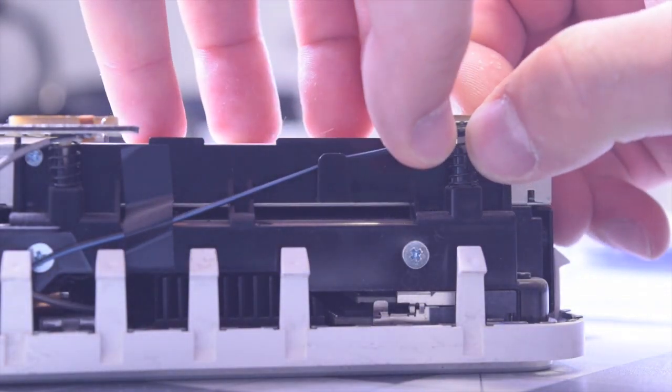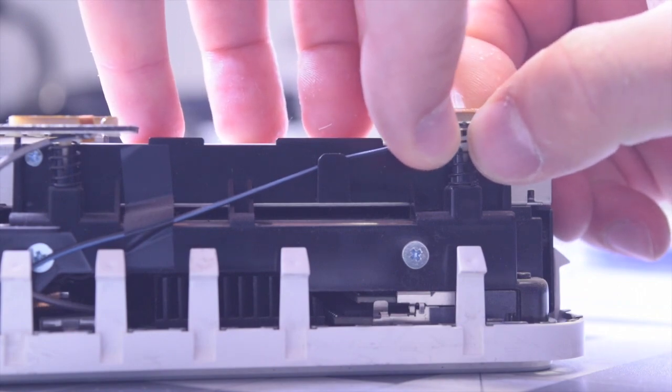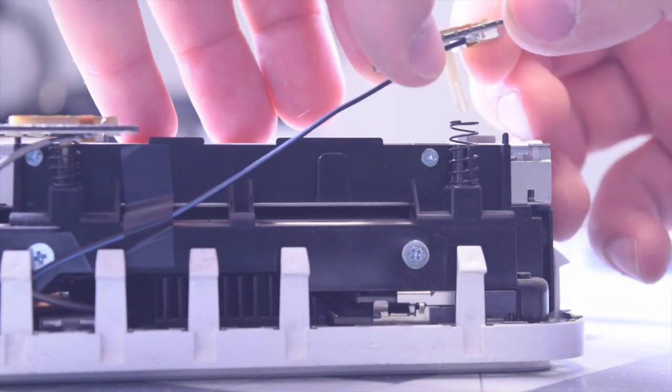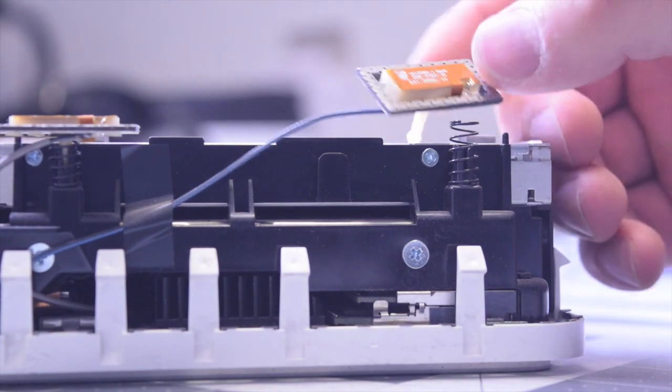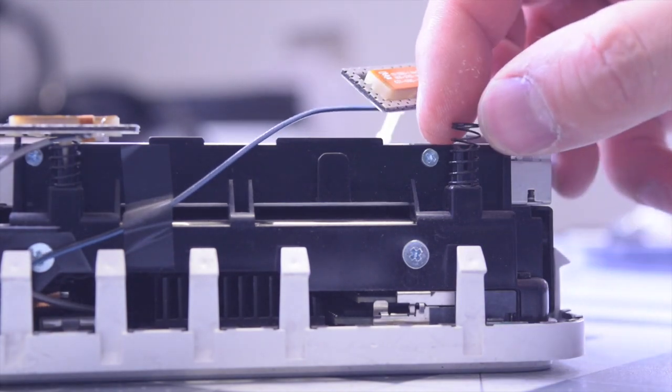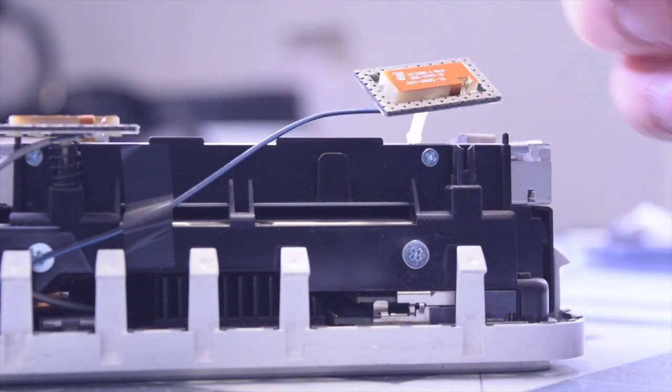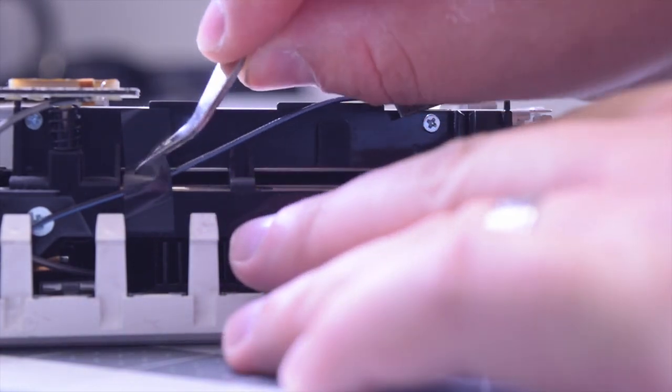We'll first need to remove three antennas. They're held in with pressure, so by just gently pushing up on them, they should be able to unclip. Don't lose the spring that's underneath. Go ahead and pick that up and put it over to the side.